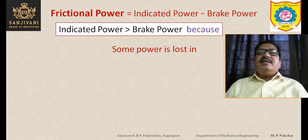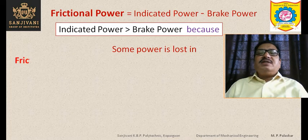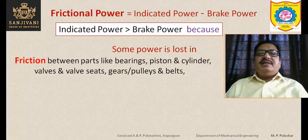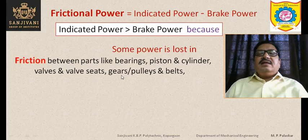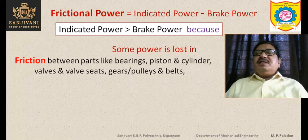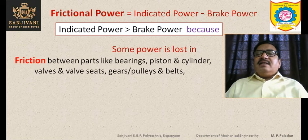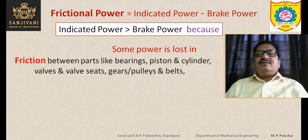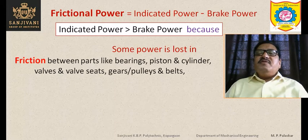The reason brake power is less than indicated power is that some power is lost in friction between various moving parts, such as bearings, pistons, cylinder walls, gears, pulleys, and belts. These moving parts are in contact with each other, and sufficient power is lost in overcoming this friction.